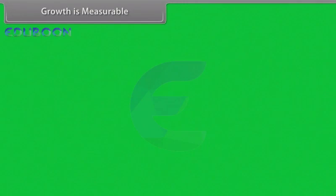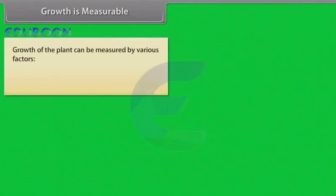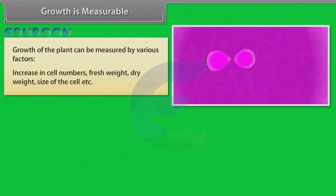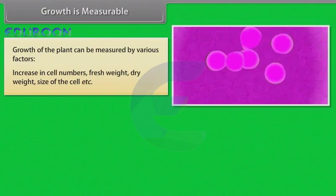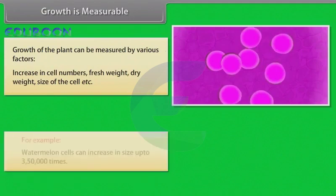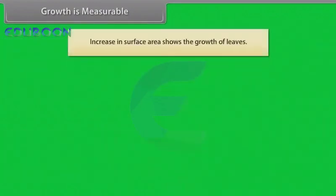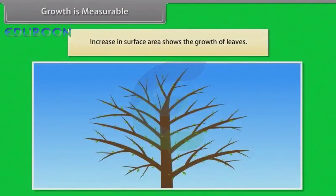Growth is measurable. Growth of the plants can be measured by various factors: increase in cell numbers, fresh weight, dry weight, size of the cell, etc. For example, watermelon cells can increase in size up to 3,50,000 times. Increase in surface area shows the growth of leaves.